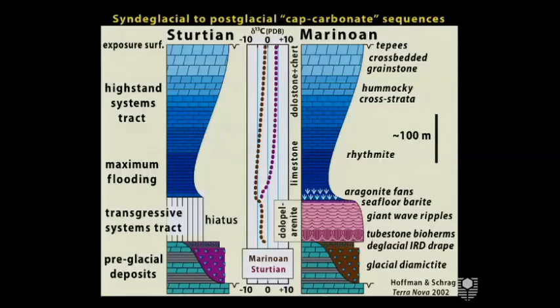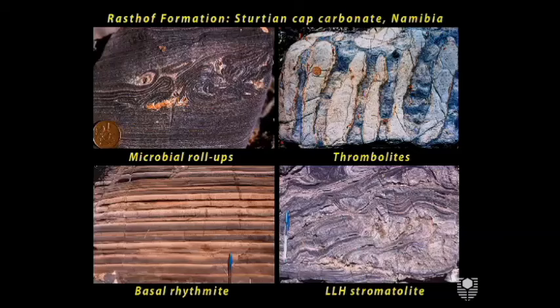There are a number of very unusual sedimentary structures associated particularly with the Marinoan cap dolomite, including tubestone stromatolites, giant wave ripples, seafloor barite, and seafloor aragonite cements. I won't have time to discuss all of these — if anyone is interested we can talk about it later — but I will briefly show you some photographs.